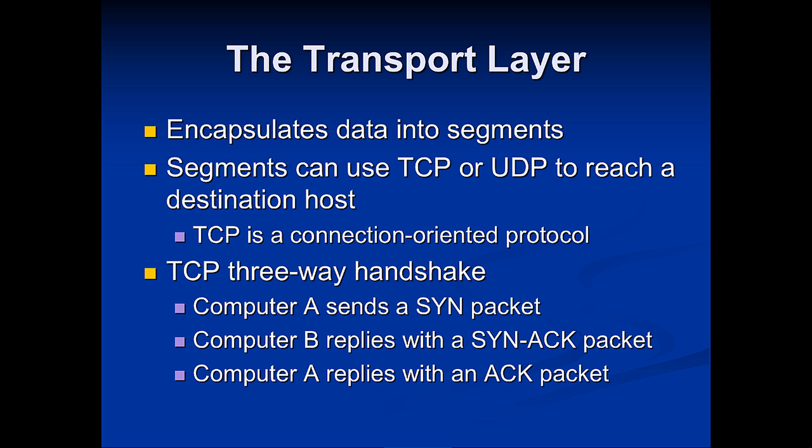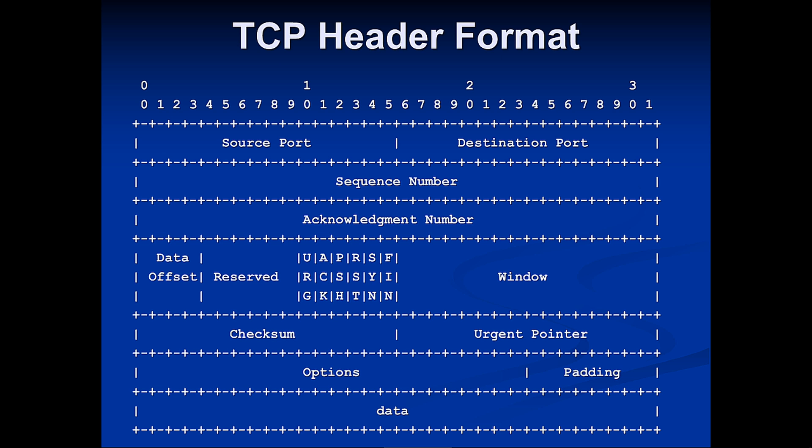The Transport layer encapsulates data into segments. We can use TCP or UDP at the Transport layer. TCP is connection-oriented; UDP is connectionless. TCP performs a three-way handshake — it's very important to understand this. Computer A sends a SYN packet, B responds with a SYN-ACK packet, and then Computer A replies with an ACK packet. The TCP header includes Source and Destination ports, Sequence, and Acknowledgements — all handled at Layer 4.